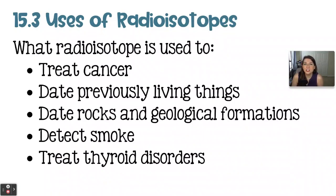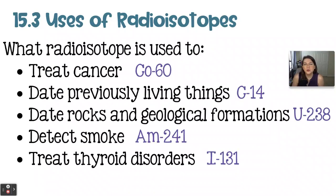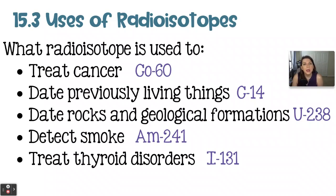The next set of questions covers common uses of radioisotopes. The radioisotope commonly used to treat cancer is cobalt-60. The isotope used to date previously living things like plants and dinosaurs would be carbon-14. To date rocks and geological formations such as mountains and valleys, that would be uranium-238. A smoke detector uses americium-241, and to treat thyroid disorders it is iodine-131.